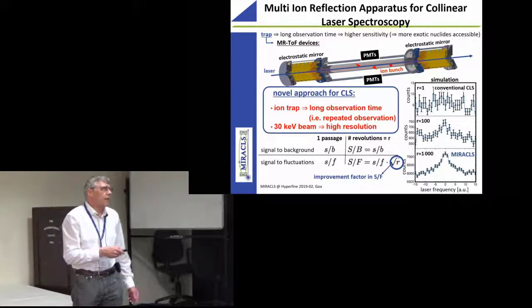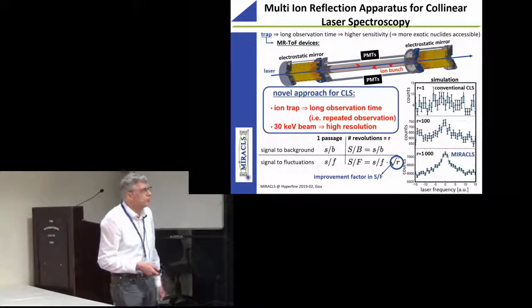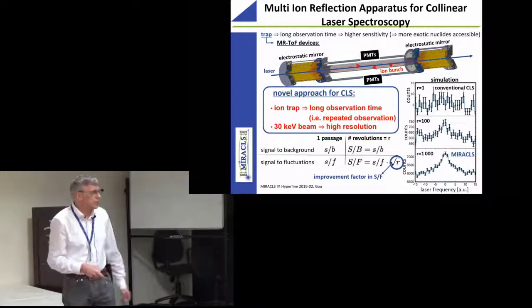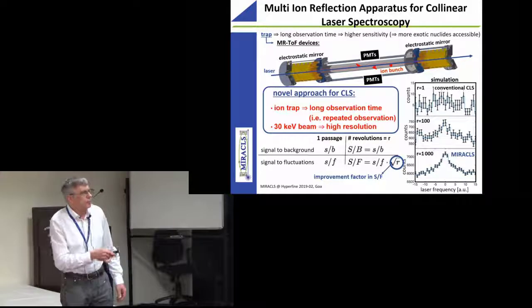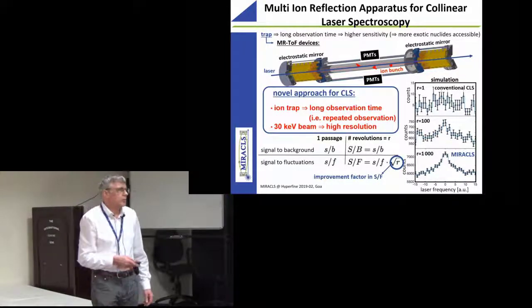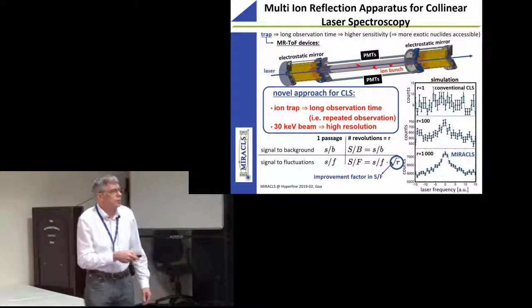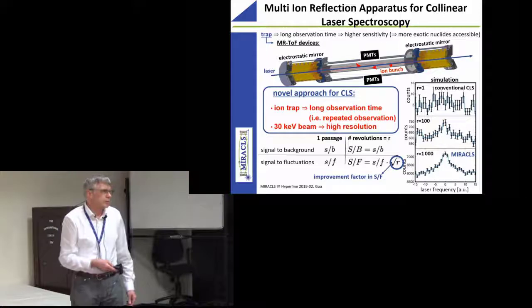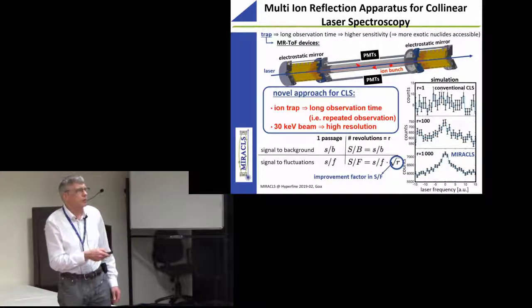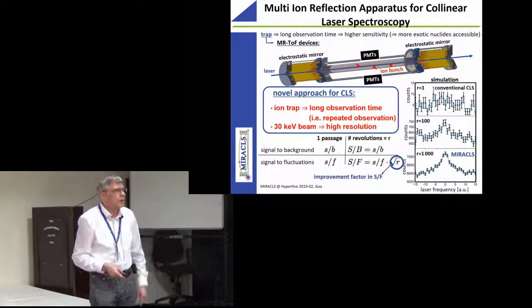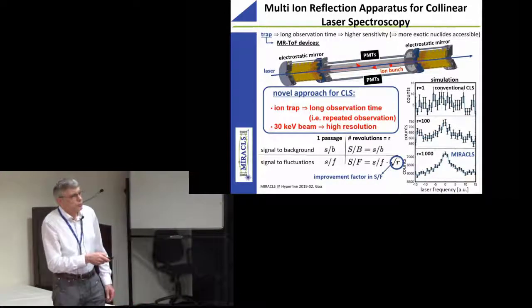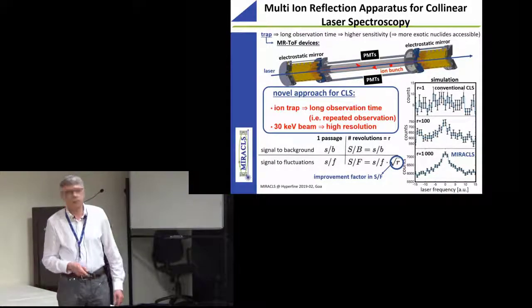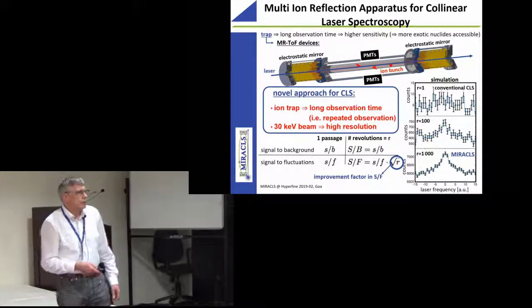We need a high beam energy in order to get the high resolution. But if we do this back and forth again and again and again, we get another improvement factor on top of that bunching as the square root of the number of revolutions that we can make. And this is a simulation of what we expect with one revolution. For a particular case after one hundred revolutions, you can already mention there is a signal and then after a thousand revolutions, it's really there.